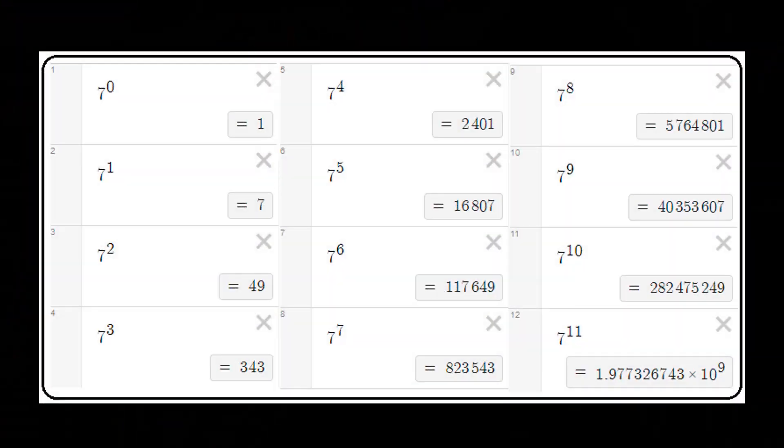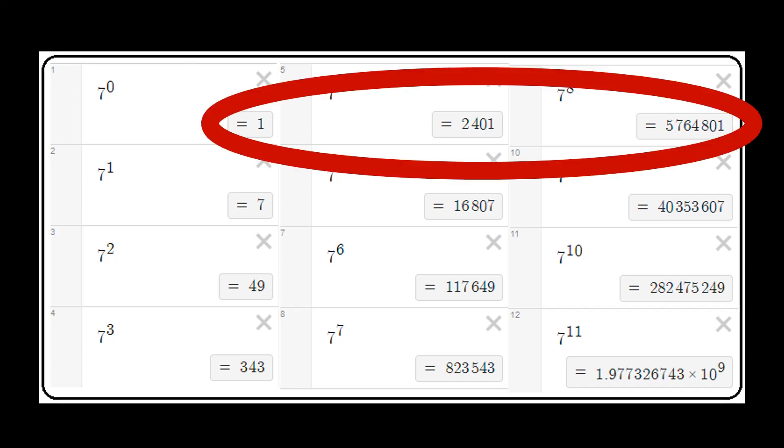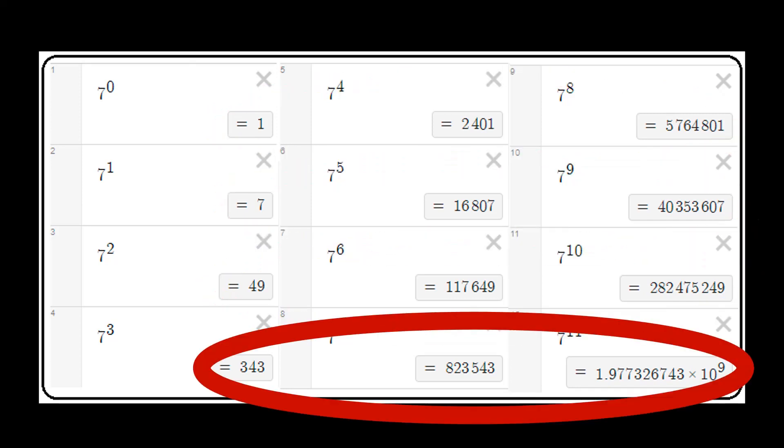And a pattern emerges. The last digits in these powers cycle: zero, one, zero, seven, four, nine, four, three.